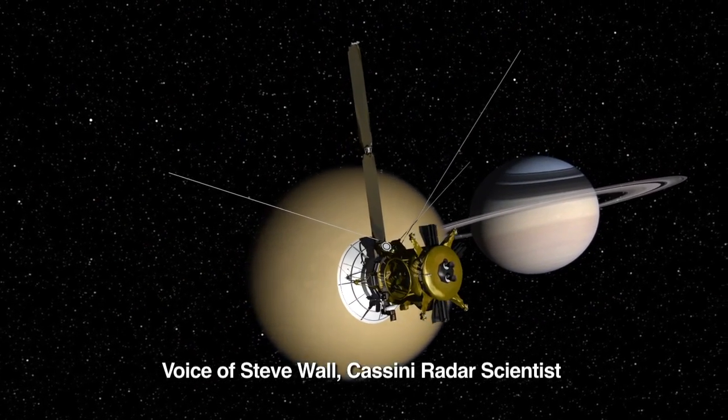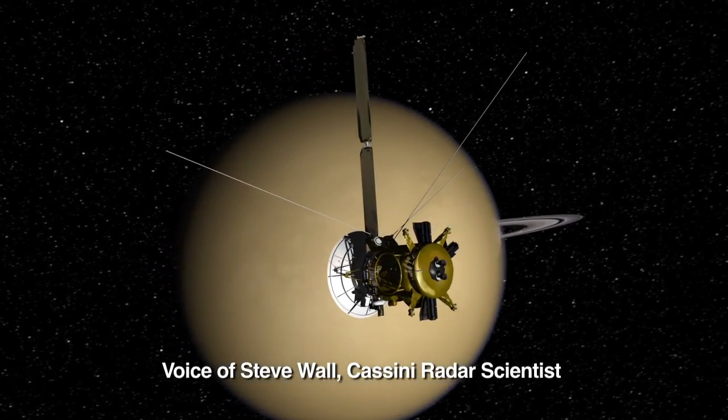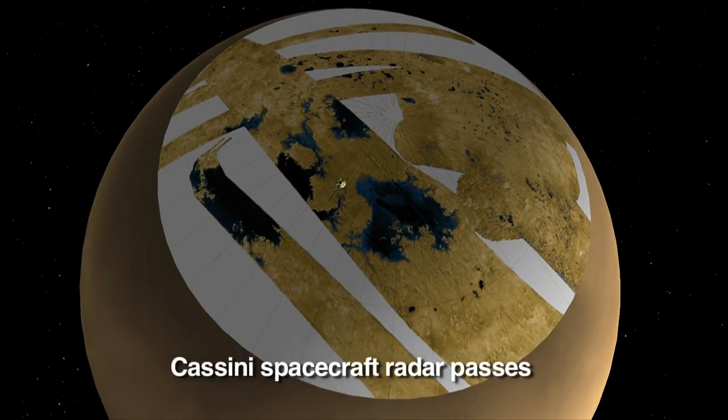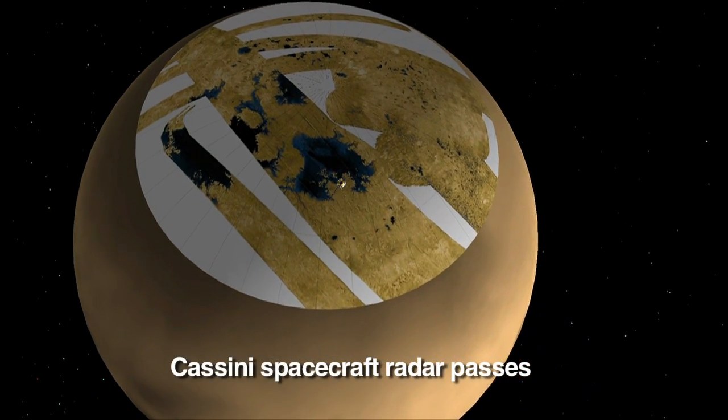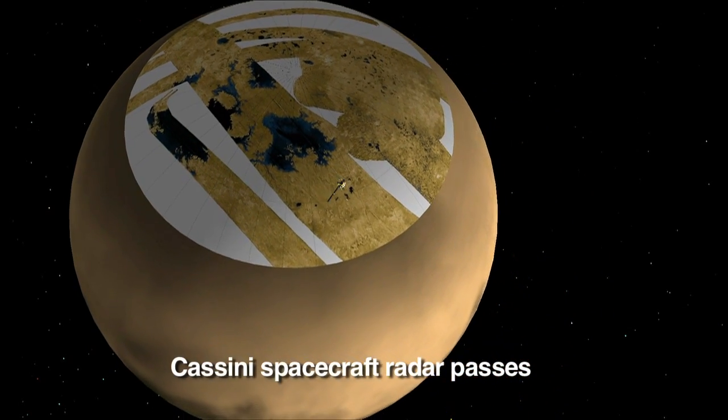Titan is the only planetary body besides Earth that we know has lakes. At 290 degrees Fahrenheit below zero, the only liquid that makes sense there is a combination of methane and ethane.